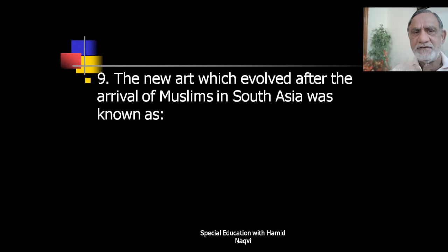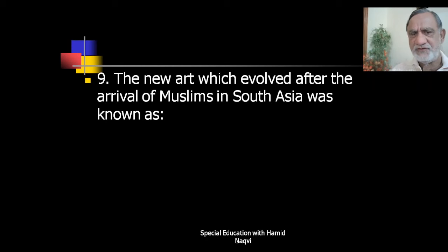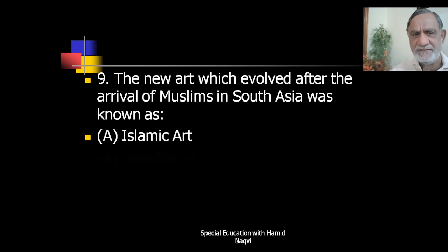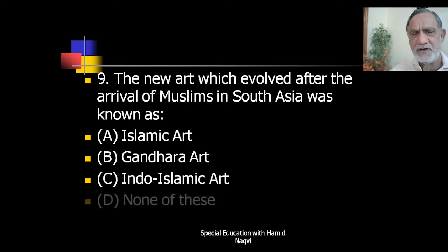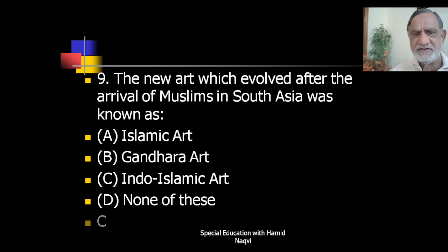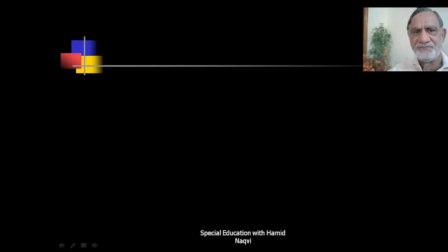Next: the new art which evolved after the arrival of Muslims in South Asia was known as — Islamic Art, Gadara Art, Indo-Islamic Art, or none of these. The correct answer is C — Indo-Islamic Art.